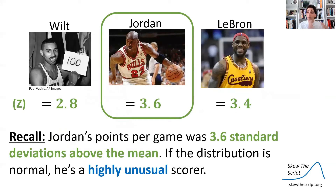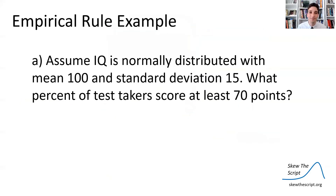Recall in our previous lesson on z-scores, Michael Jordan's points per game was 3.6 standard deviations above the mean. So if the distribution of points per game is normal, you can see how unusually high a score Michael Jordan was for his era. That gives you some way of quantifying how unusual a z-score might be if a distribution is normal.